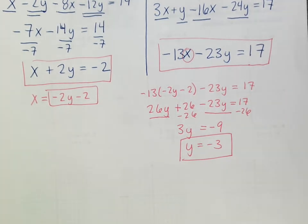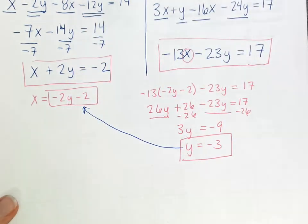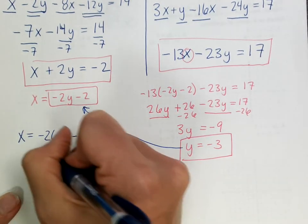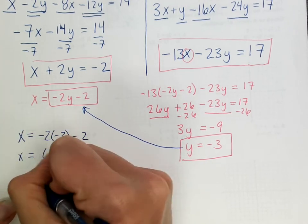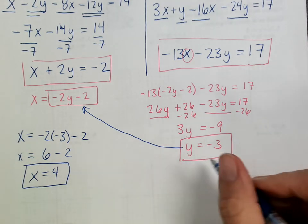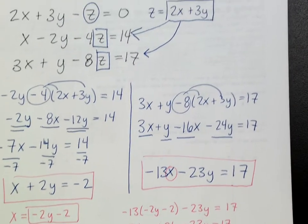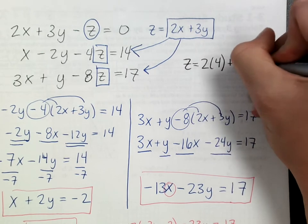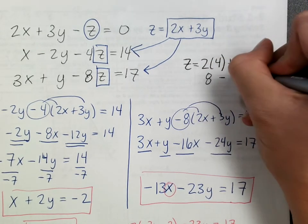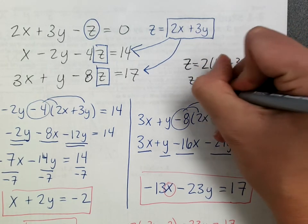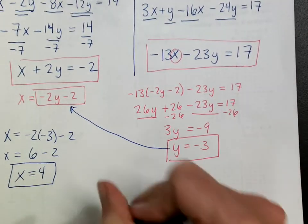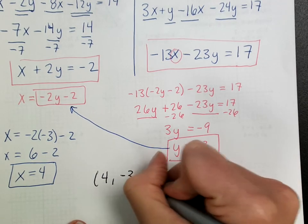Once y is found, I reverse-substitute to find the others. Plugging y = negative 3 into x = negative 2y minus 2: x = 6 minus 2 = 4. Then plugging x = 4 and y = negative 3 into z = 2x + 3y: z = 8 minus 9 = negative 1. The ordered triple answer is (4, negative 3, negative 1).